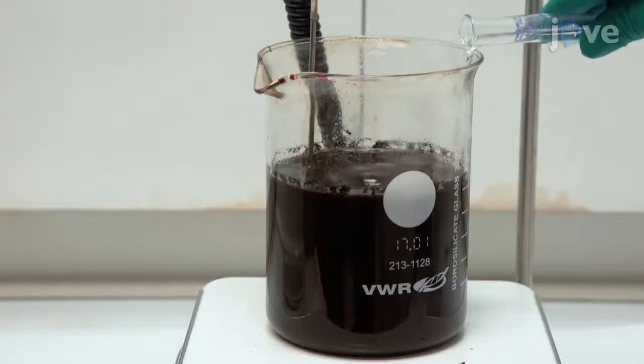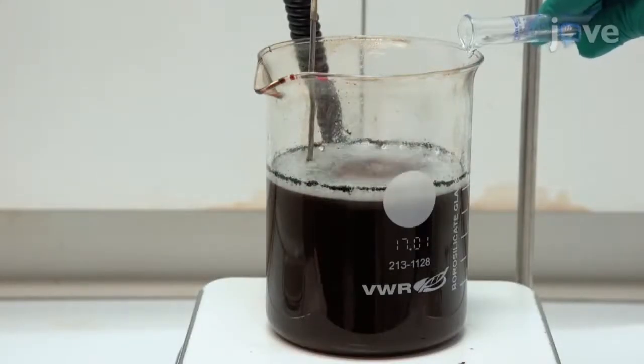Add 7.5 milliliters of 30% hydrogen peroxide to the hot dispersion.